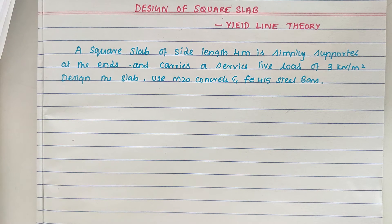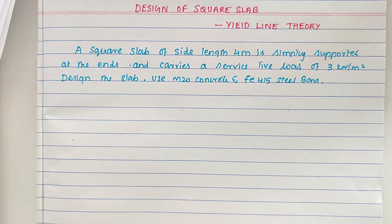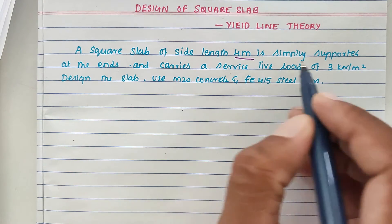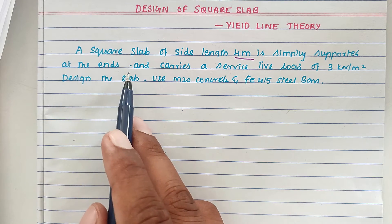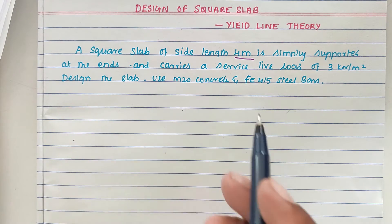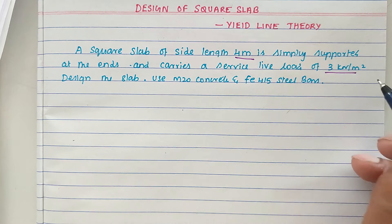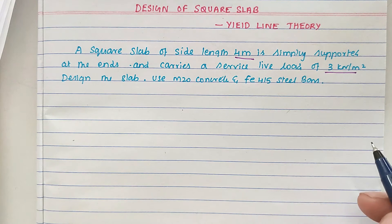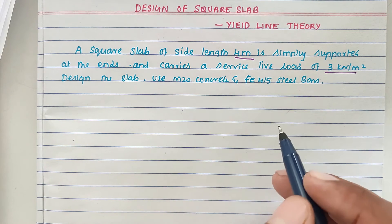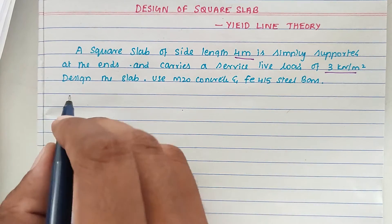Hello friends, welcome to Silver Engineering Exam. Today we're going to see a problem related to design of RC elements, specifically the design of a square slab using yield line theory. The problem is: a square slab of side length 4 meters is simply supported at the ends and carries a service live load of 3 kilo Newton per meter square. Design the slab using M20 grade concrete and Fe 415 steel.